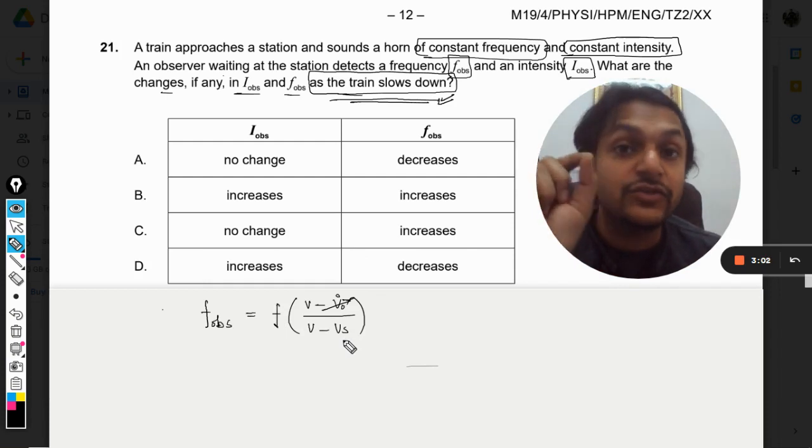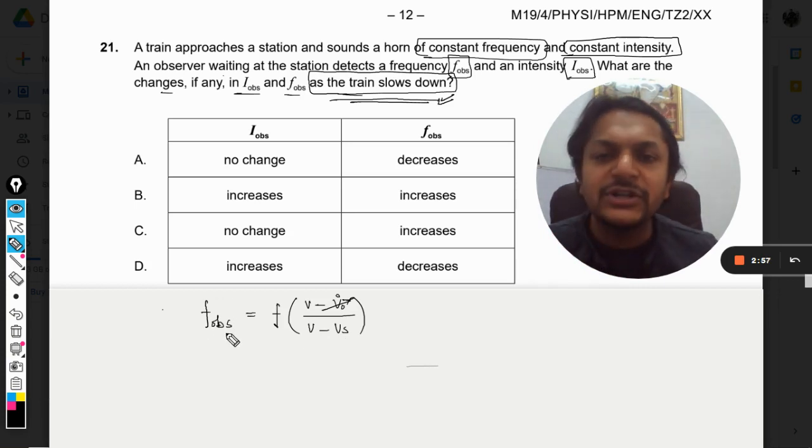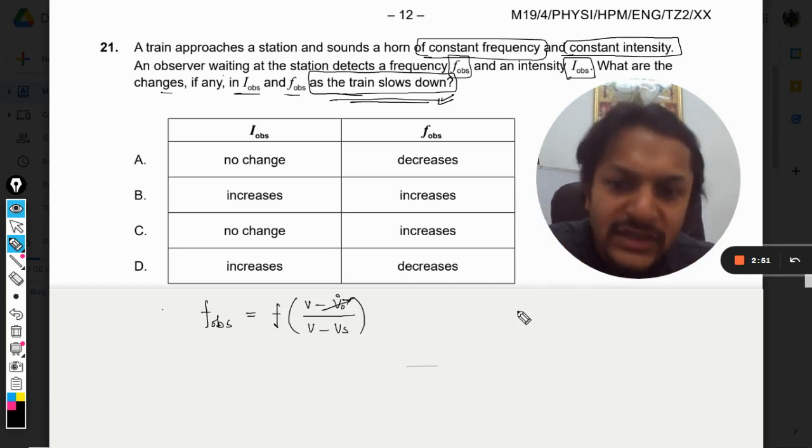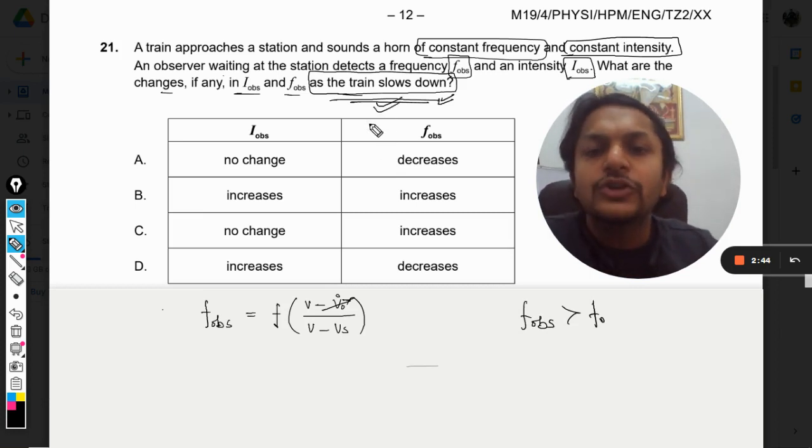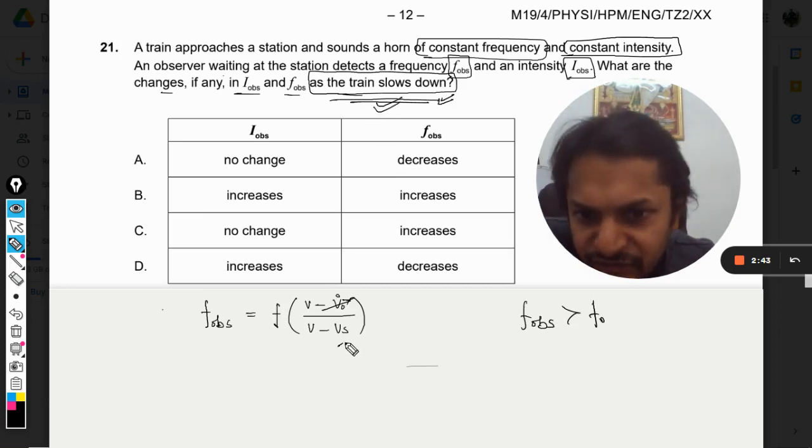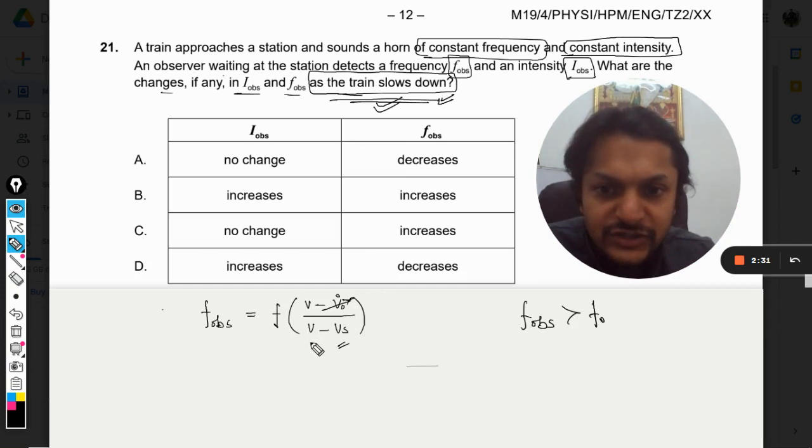So the distance is reducing, so I would say that v is the velocity of sound and v_s is the velocity of the source, that is the velocity of train. So both of them we are now reducing it, so the frequency observed by the observer will be more than the original frequency.